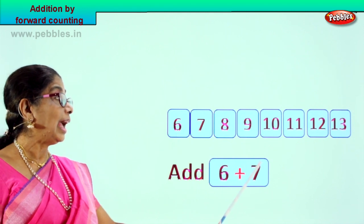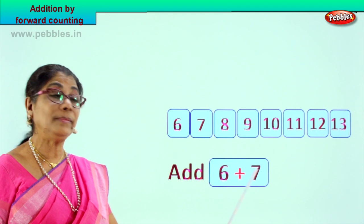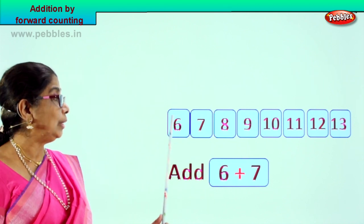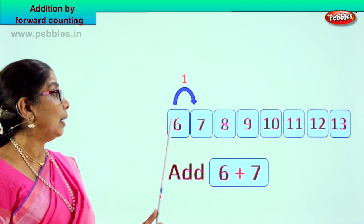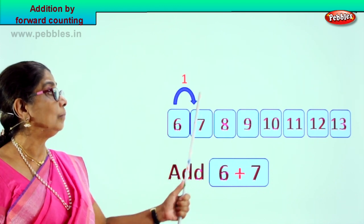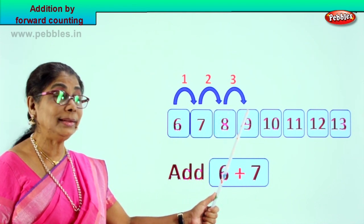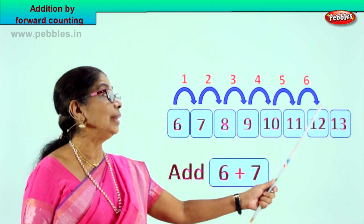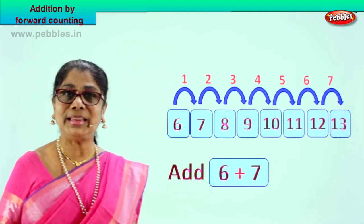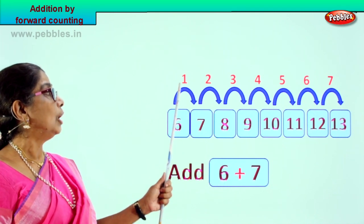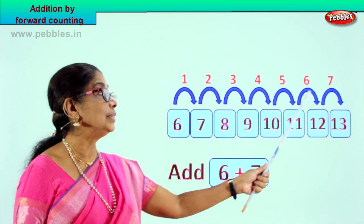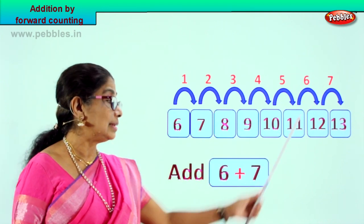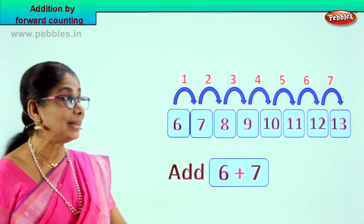Now we have some numbers here and we are going to count forward. This is number 6. From 6 to 7 is 1, 7 to 8 is 2, 8 to 9 is 3, 9 to 10 is 4, 10 to 11 is 5, 11 to 12 is 6, 12 to 13 is 7. We already have 7 here and we counted 1, 2, 3, 4, 5, 6, 7. That is forward counting! 6 plus 7 — what is your answer? 13.